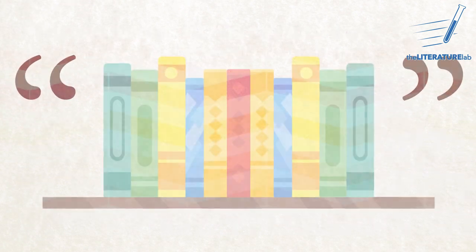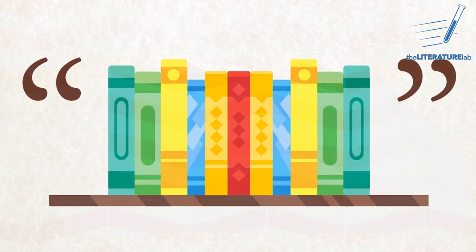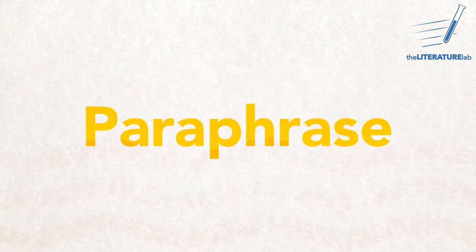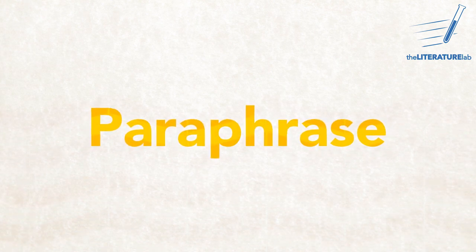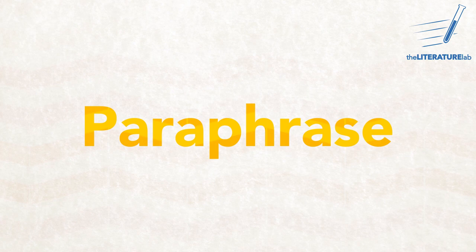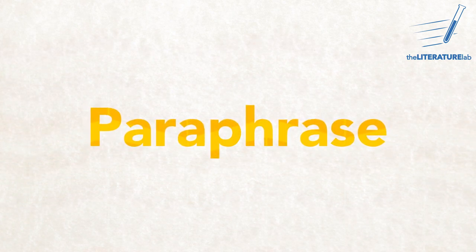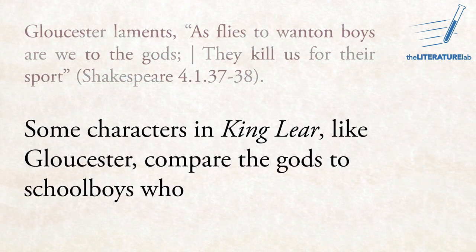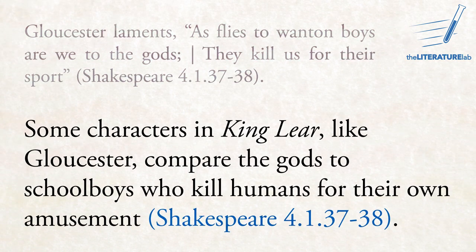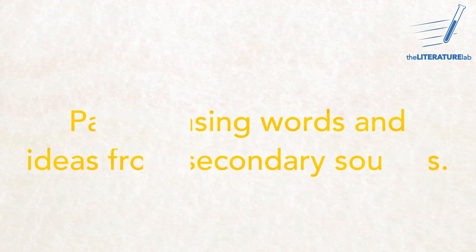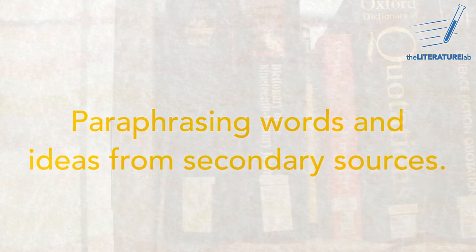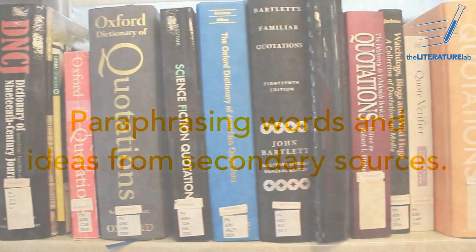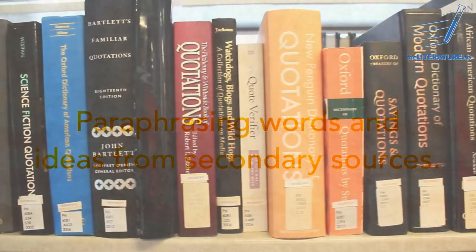Sometimes the author's exact words matter to your argument, but sometimes you just need to convey the general idea — and that is when you paraphrase, or rewrite the author's words in your own words. You still need to tell readers where those original words are, even when you're not quoting them directly. Paraphrasing is also very common when you're using words and ideas from secondary sources to make your argument. You need to cite them every time you use them, so readers always know where your ideas end and theirs begin.